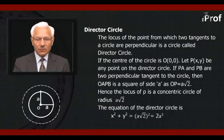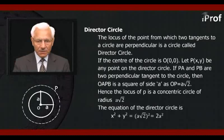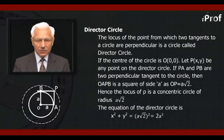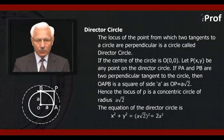Let P(x, y) be any point on the directed circle, and PA, PB are two tangents to the circle which are perpendicular to each other. Then O, A, P, B form a square of side a.